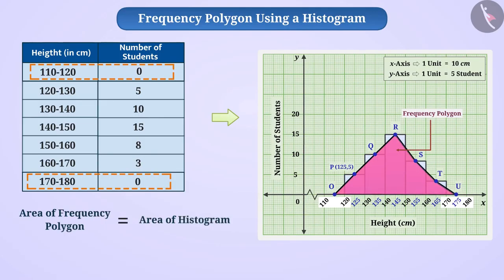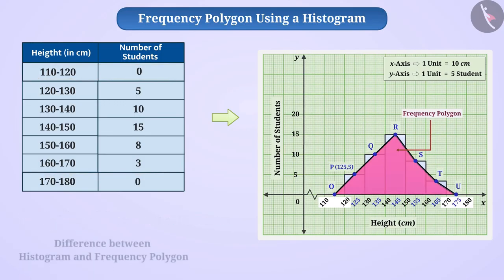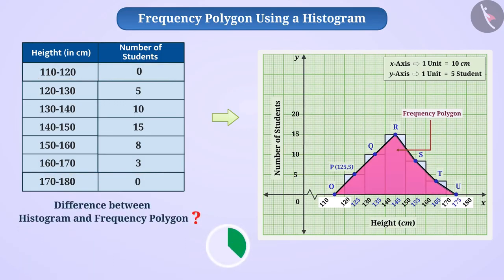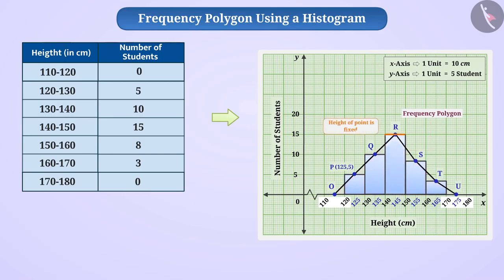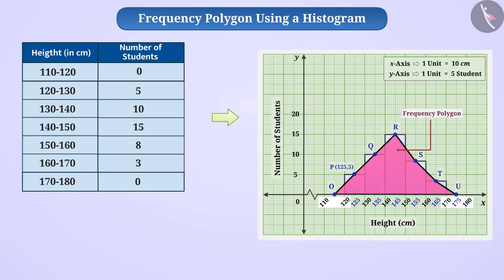Now you know about histograms and frequency polygons — can you tell the difference between the two? Data is represented in the histogram as rectangles, while data in a frequency polygon is represented using a line graph. In a histogram, the height of different points within a class interval is fixed, showing a uniform distribution of frequencies. In a frequency polygon, the height of different points in a class interval is not fixed, meaning frequency polygons do not have uniform distribution of frequencies.